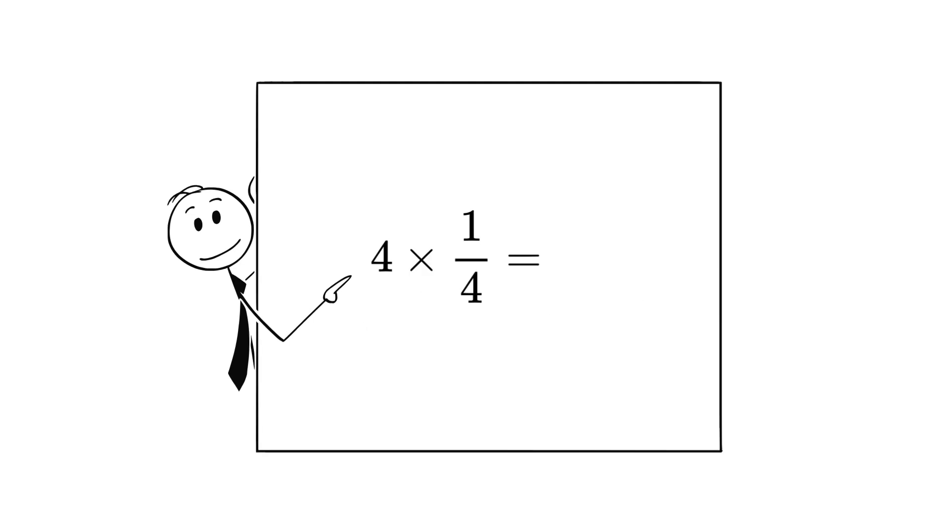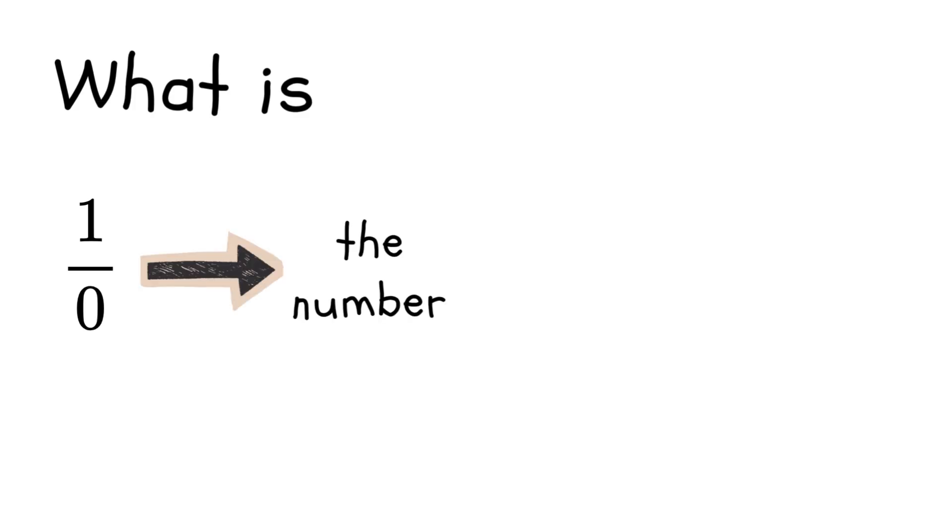Four times one-fourth equals one. So to divide by zero, we would need to multiply by its inverse, one divided by zero. But what is one divided by zero? It would have to be the number that, when multiplied by zero, gives you one.